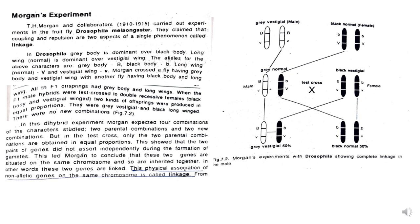The two types of progenies were similar to the parental combinations: grey with vestigial wings and black body with long wings — 50% of one parent and 50% of the other parent — and there were no new combinations. From this dihybrid experiment, Morgan expected four combinations: two parental and two new combinations. But contrary to his expectation, only two parental combinations were obtained in equal proportions.